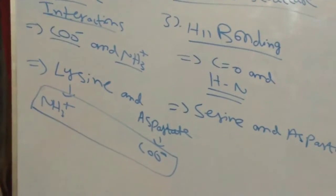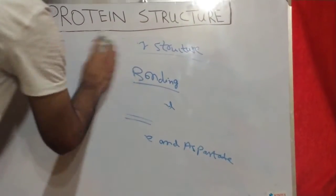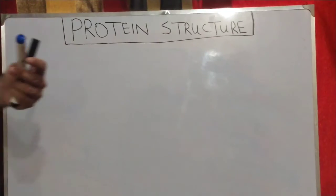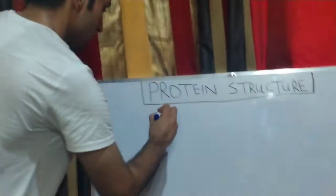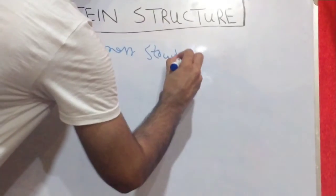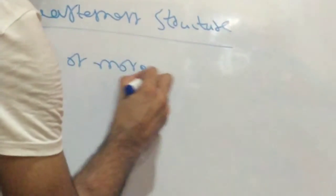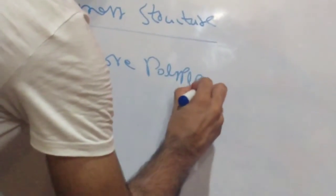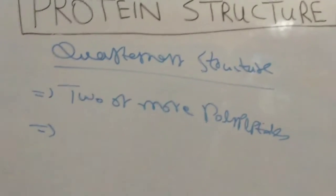This completes the tertiary structure. Now talking about the quaternary structure of the protein. Proteins consisting of one polypeptide are referred to as monomeric proteins, but proteins consisting of two or more polypeptides are said to exhibit quaternary structure. The quaternary structure consists of two or more polypeptides that are stabilized by non-covalent interactions, which include ionic bonding, hydrogen bonding, and hydrophobic interactions.